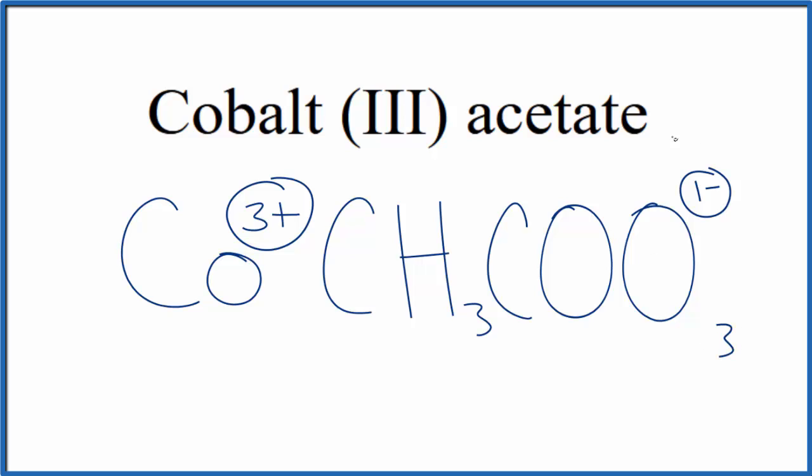If we had three of these acetate ions right here, that would give us a net charge of zero. Three times one minus, that's three minus, balances out the three plus. We would need to put the acetate ion in parentheses, since we have three of them.